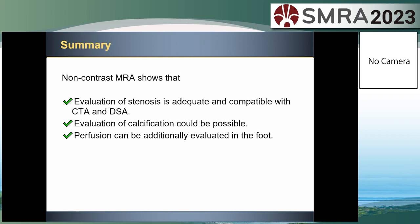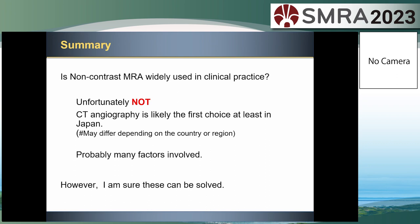In today's presentation, non-contrast MRA shows that evaluation of stenosis is adequate and comparable to CTA and DSA. Evaluation of calcification could be possible, and perfusion can be additionally evaluated in the foot. However, non-contrast MRA is not yet widely used in clinical practice — CT angiography is likely the first choice, at least in Japan. Probably many factors are involved, but I'm sure they can be solved by all of us together. I believe if we combine everyone's wisdom, we will be able to overcome any difficulties. Thank you.